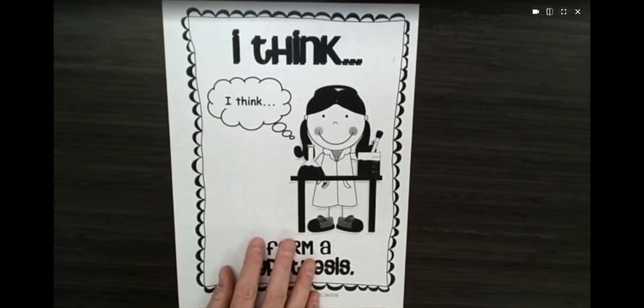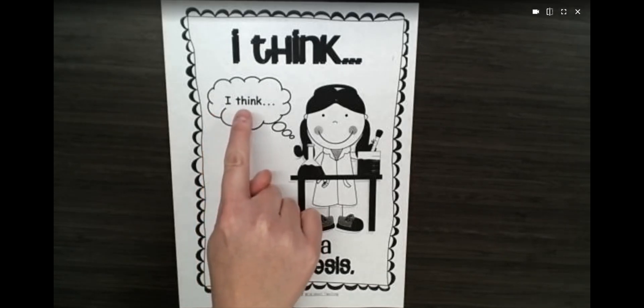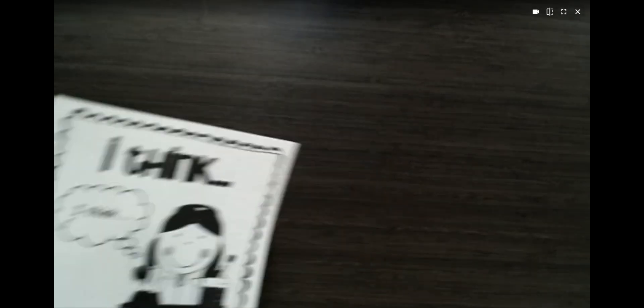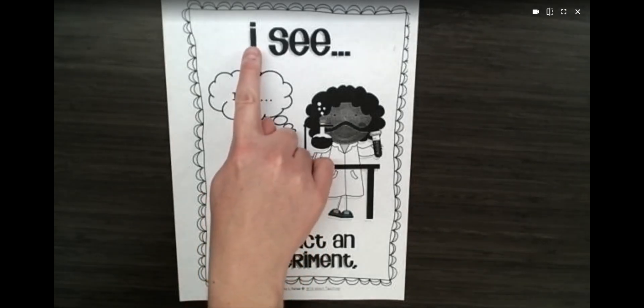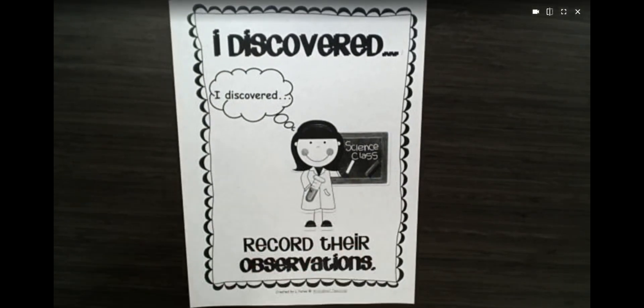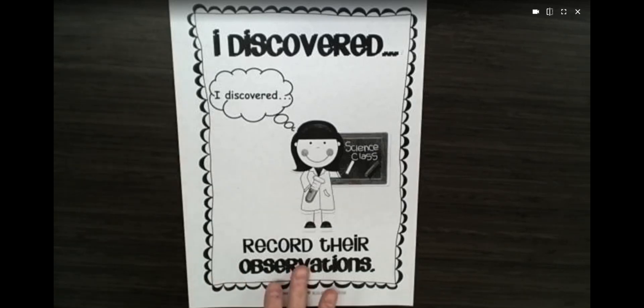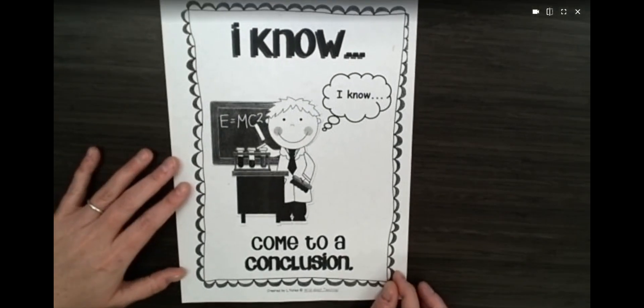A scientist always starts with a question — they say, I wonder. Then a scientist makes a hypothesis; that's when they say what they think or predict will happen. Then the scientist conducts the experiment and talks about what he or she sees. Then the scientist records or writes down their observations — their I-discovered-this or I-discovered-that — in their field journal. And last, a scientist forms a conclusion, talking about what they know and what they learned from the science experiment.